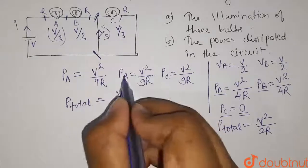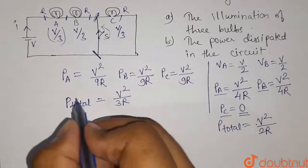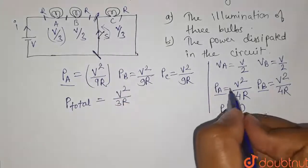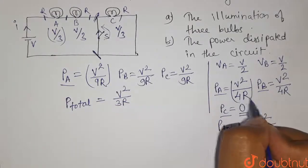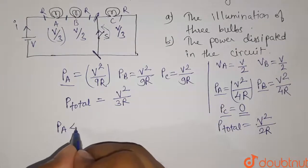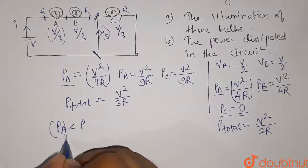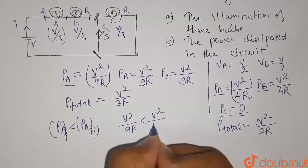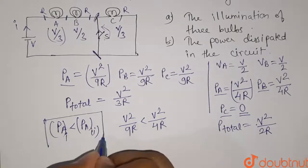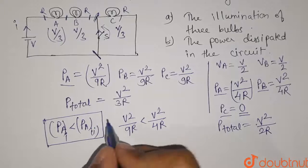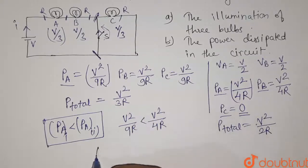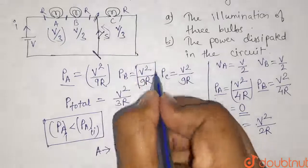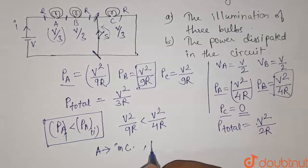Comparing the two cases: for bulb A, power in case one is V²/9R and in case two is V²/4R. Since V²/9R is less than V²/4R, the power consumed by bulb A increases — meaning the illumination of bulb A increases. The values for bulb B are identical, so the illumination of bulb B also increases.